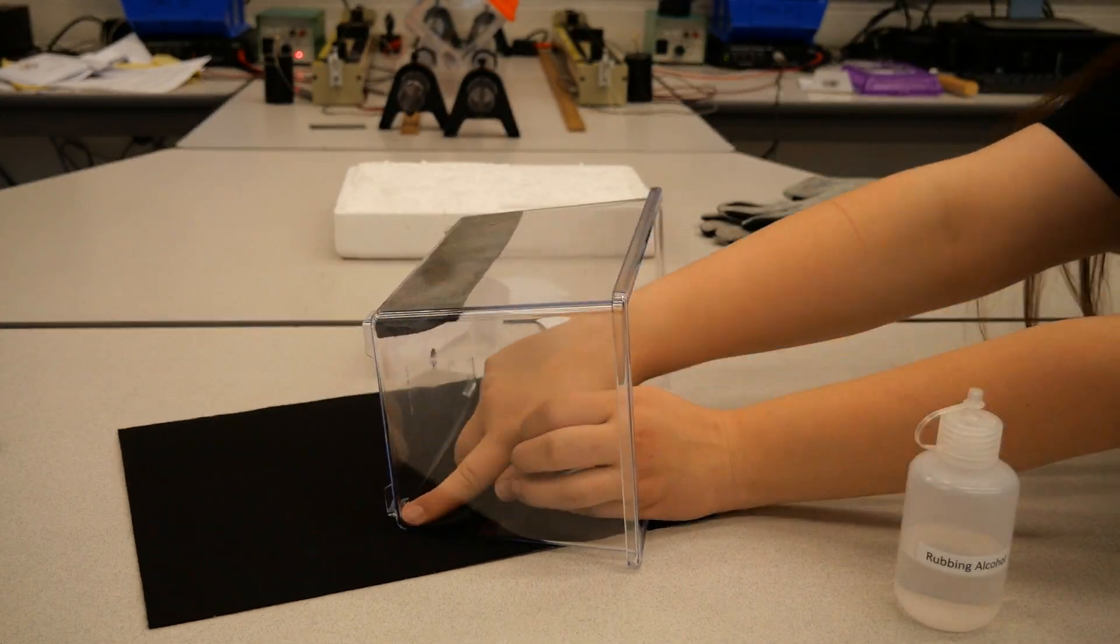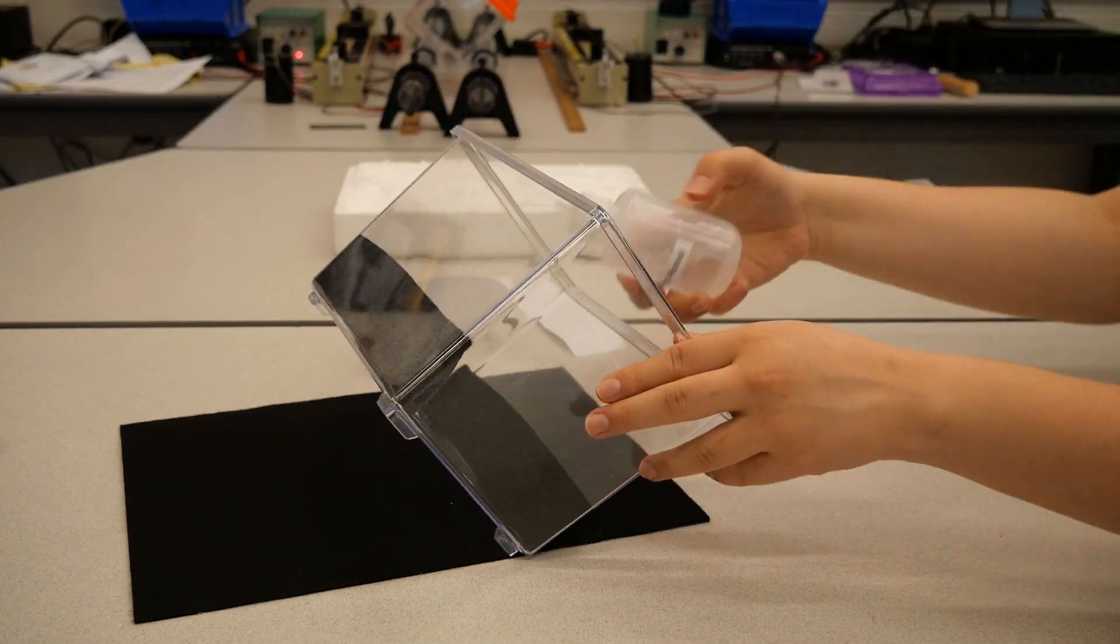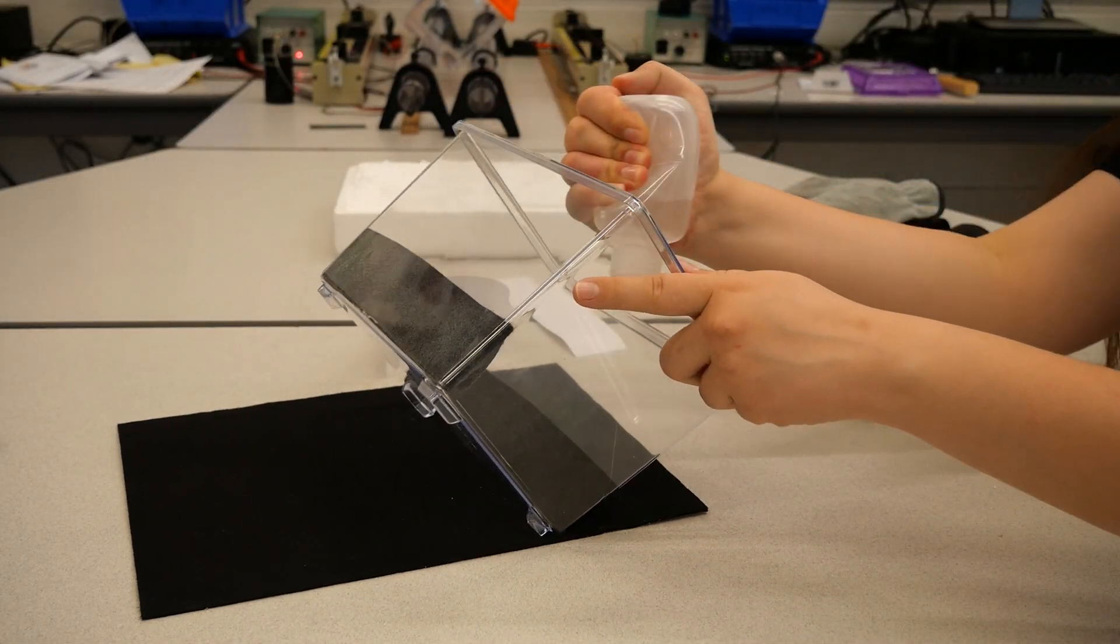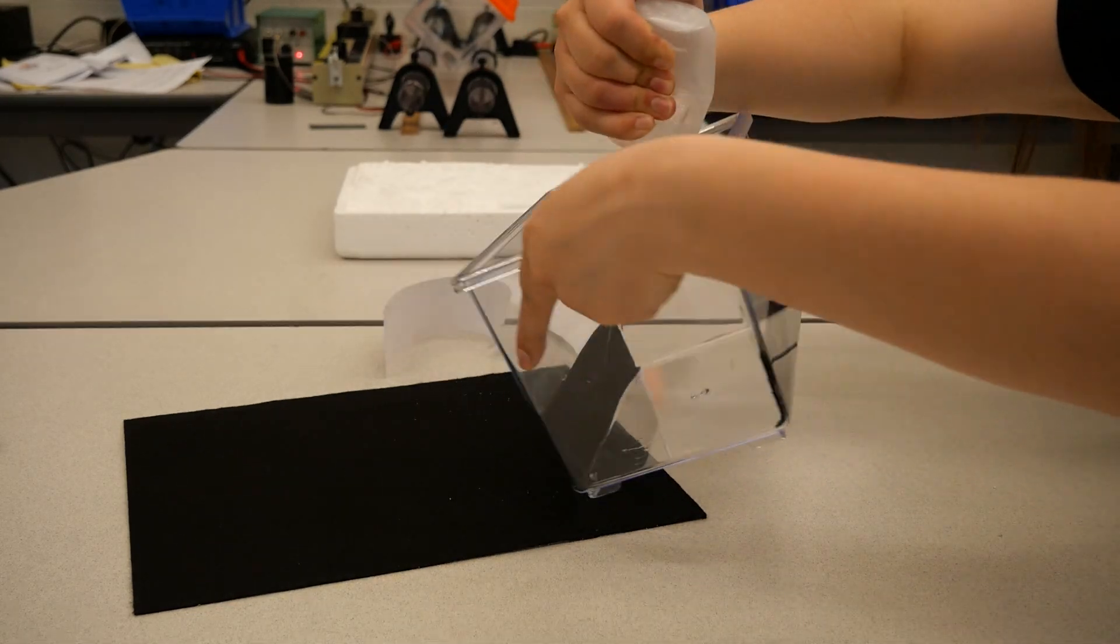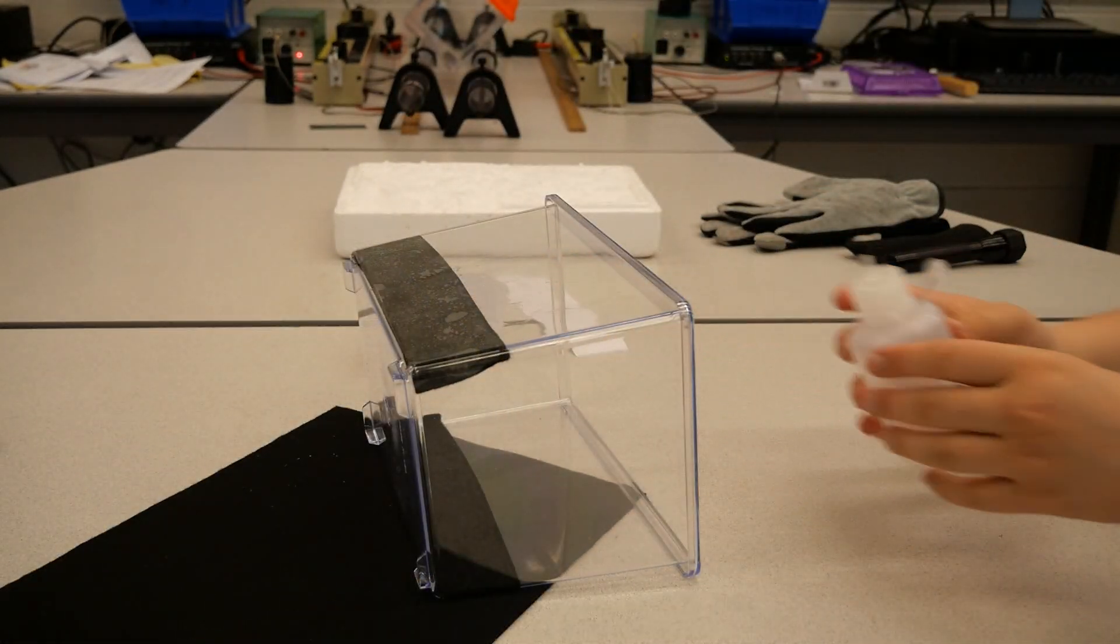Once you've stuck both of your felt strips on the inside of your plastic box, use the rubbing alcohol and make sure to thoroughly wet each felt strip. You don't want it wet enough to be dripping, but you want it very, very wet.